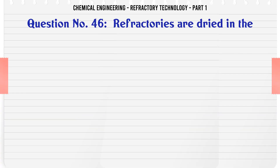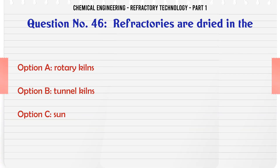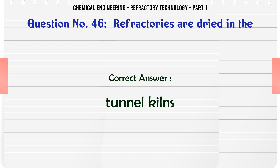Refractories are dried in the: A. Rotary kilns, B. Tunnel kilns, C. Sun, D. None of these. The correct answer is Tunnel kilns.